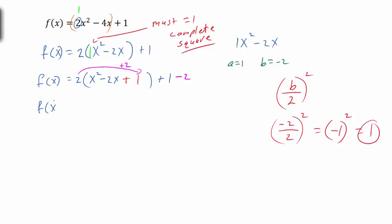Now we bring everything down: 2 times (x² - 2x + 1) becomes a perfect square, (x - 1)². The -1 came from taking half of our b value, which was -1. If half the b value had been +4, we'd write (x + 4). So this factors as (x - 1)². Then 1 - 2 gives us -1 on the outside.